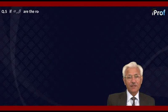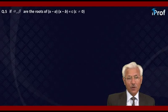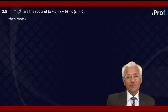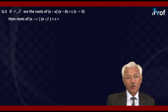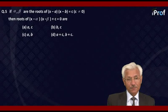If α and β are the roots of (x - a)(x - b) = c, where c ≠ 0, then the roots of (x - α)(x - β) + c = 0 are: (a) a, c; (b) b, c; (c) a, b; or (d) a + c, b + c.